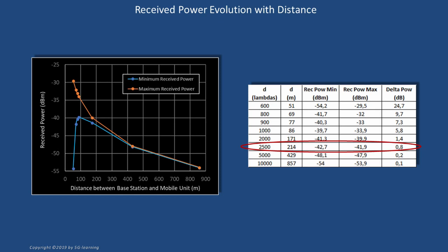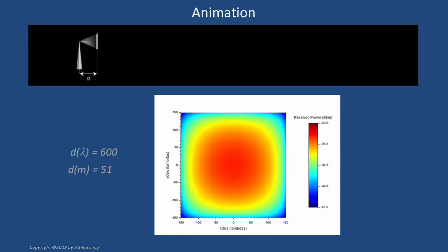This graph and table provides a quantitative perspective on the dependency between received power and base-to-mobile distance. The difference between maximum and minimum powers on the observation window falls as the distance between transmitter and receiver grows. For short distances the differential range is high, but it steadily falls as distance increases. At around 2500 wavelengths — approximately 200 meters in this example — this difference is already below 1 dB.